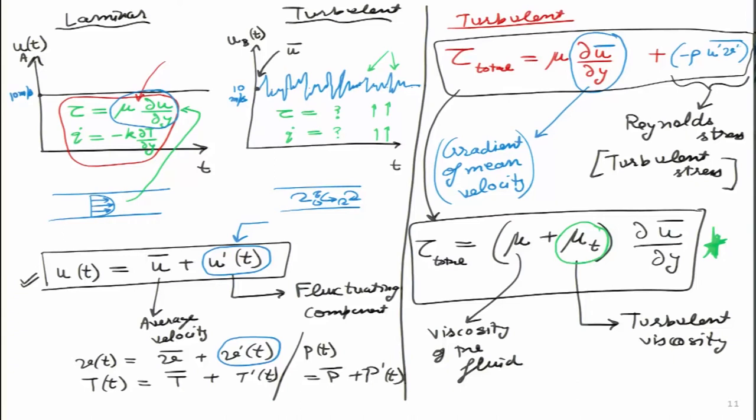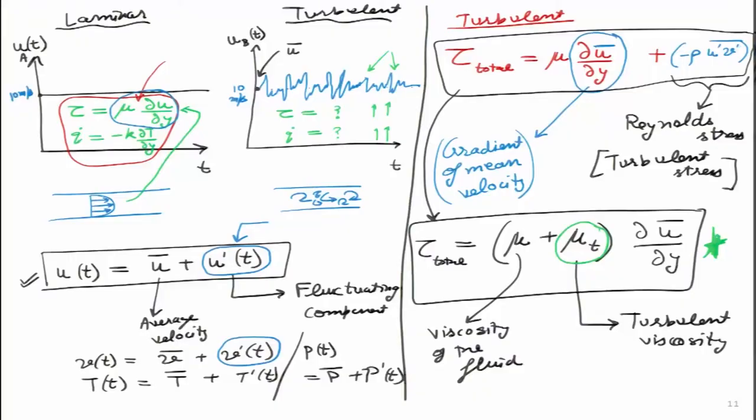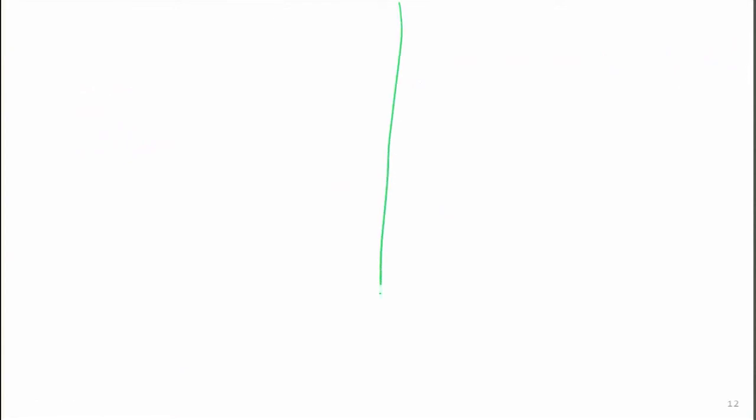μ is a property of the fluid — it is different for air or water. But μ_t is a property of the flow, not the fluid. For example, if water is stationary in a cup, there are no fluctuations, so the turbulent viscosity μ_t for that water is zero. As we increase the turbulence — by stirring more vigorously — μ_t increases.